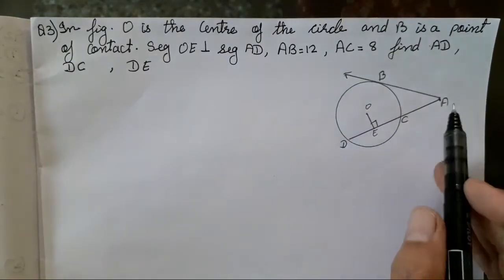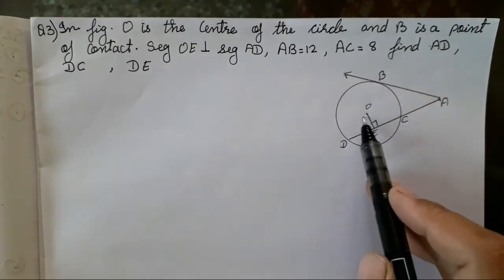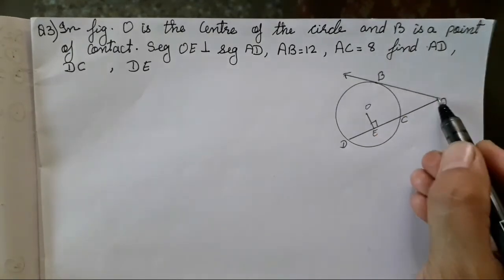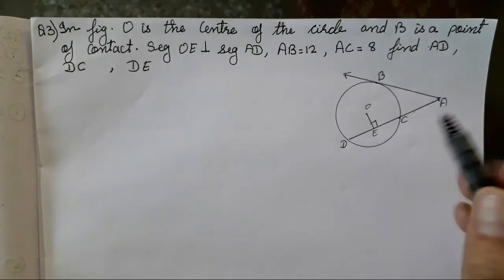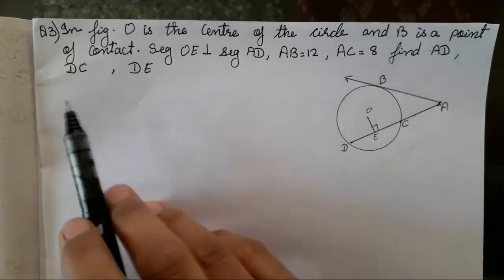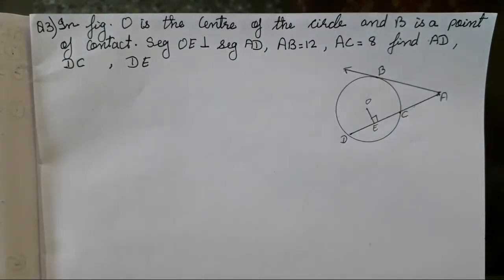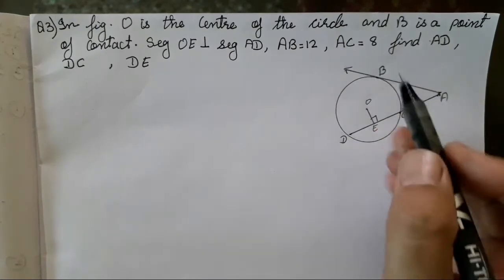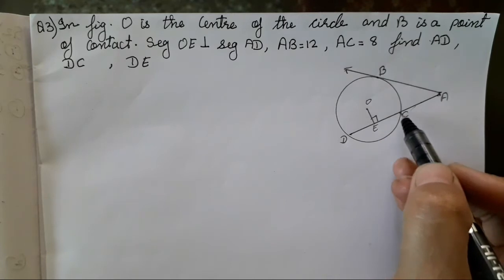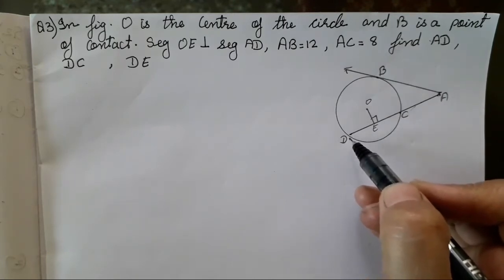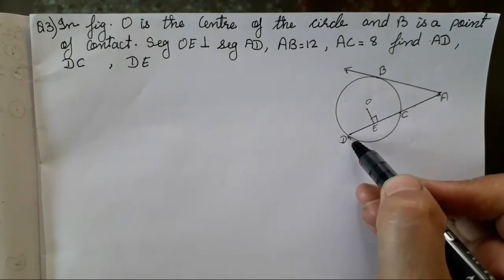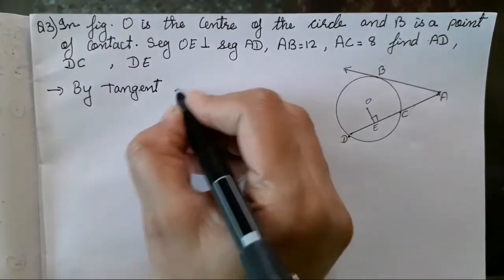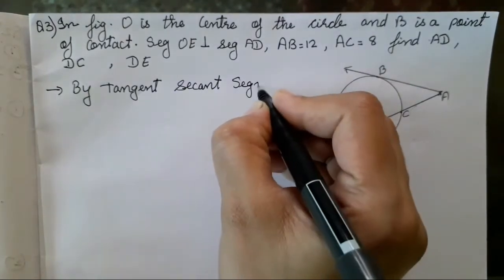In the figure, O is the center of the circle and B is the point of contact. Segment OE is perpendicular to segment AD. AB is 12 cm and AC is 8 cm. We have to find AD, DC, and DE. We will use the tangent-secant theorem because AB is touching the circle at point B, and line ACD is the secant intersecting at points C and D.